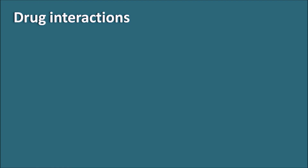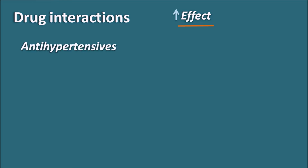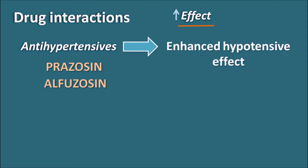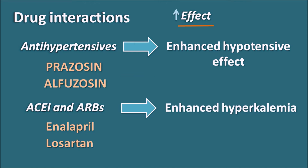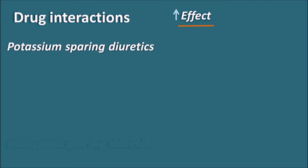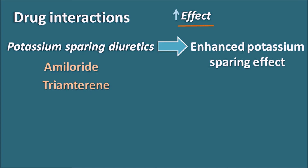Drug interactions of spironolactone are important and should be thoroughly checked. It can increase the effect of antihypertensives like prazosin and alfuzosin by enhancing the hypotensive effect through increased sodium excretion. ACE inhibitors and ARBs — such as enalapril and losartan — also interact, as both spironolactone and these drugs can produce hyperkalemia together. It can also interact with other potassium-sparing diuretics like amiloride and triamterene, potentially causing severe hyperkalemia.